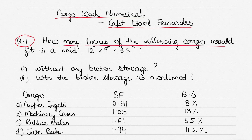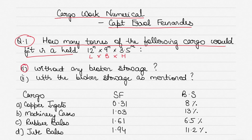The question is: how many tons of the following cargo would fit in a hold with dimensions 12 meters by 9 meters by 3.5 meters? This 12 by 9 by 3.5 represents the length, breadth, and height of the cargo hold. You have to calculate how many tons you can load — firstly without any broken stowage, and secondly with broken stowage.